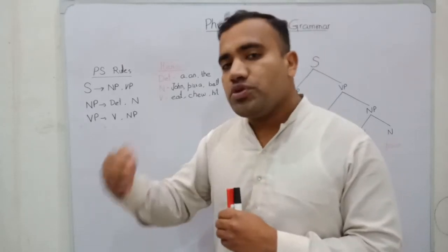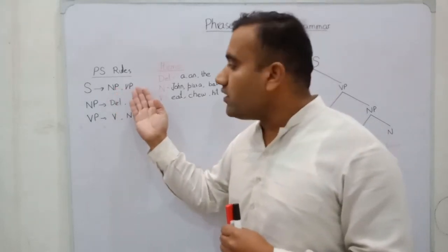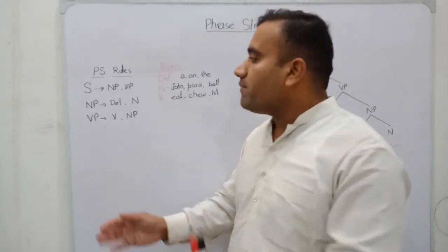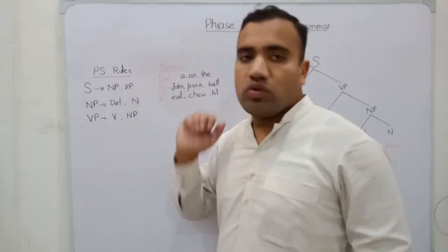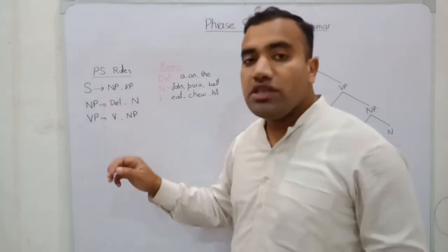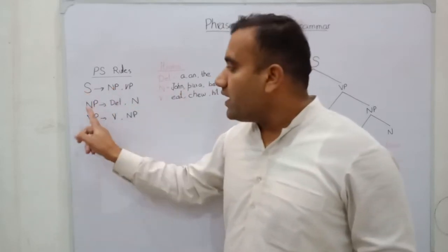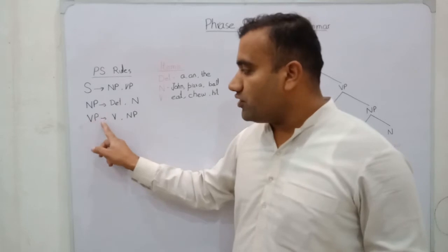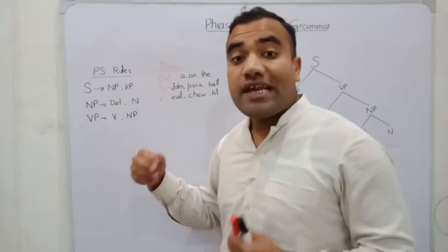If we expand the noun phrase, NP consists of a determiner and a noun (N). The VP consists of a verb (V) and an NP. So the arrow means 'consists of': S → NP + VP, NP → Det + N, and VP → V + NP.